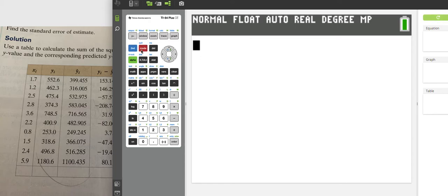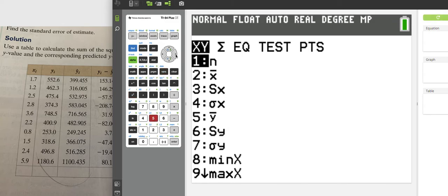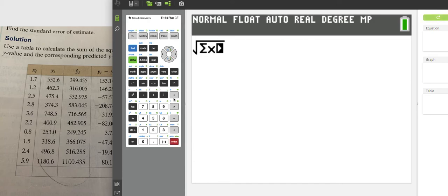The calculation for the standard error will be the square root of that. Go into vars, go to number five, sum. I want the sum of the x's, and I want to divide that by n minus two because we have two sets of data. We have ten data points, so I want to divide this by our degrees of freedom.